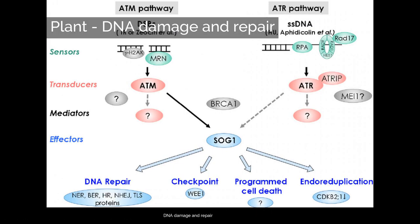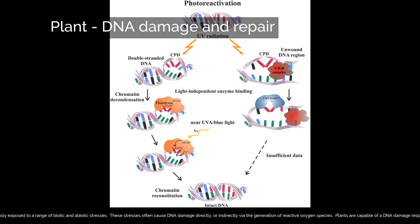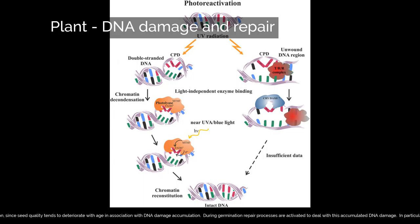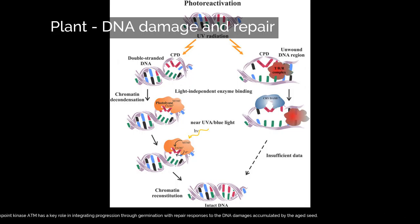DNA damage and repair. Plants are continuously exposed to a range of biotic and abiotic stresses. These stresses often cause DNA damage directly, or indirectly via the generation of reactive oxygen species. Plants are capable of a DNA damage response that is a critical mechanism for maintaining genome stability. The DNA damage response is particularly important during seed germination, since seed quality tends to deteriorate with age in association with DNA damage accumulation. During germination, repair processes are activated to deal with this accumulated DNA damage. In particular, single- and double-strand breaks in DNA can be repaired. The DNA checkpoint kinase ATM has a key role in integrating progression through germination with repair responses to the DNA damages accumulated by the aged seed.